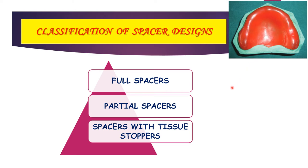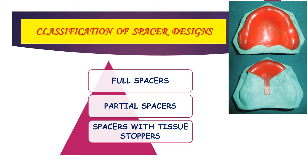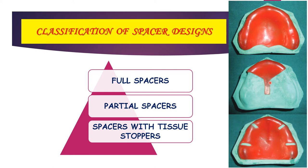The next one is the partial spacer. Based on clinical needs, it is made to cover specific areas only, like T-shaped and I-shaped spacers. Next is the spacer with tissue stoppers. Tissue stoppers are windows made bilaterally at the canine and molar regions, mostly 2 mm in width, and they help in proper vertical seating of the impression tray and control the thickness of the impression material. These are the classifications: full spacer, partial spacer, and spacer with tissue stops.